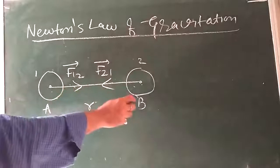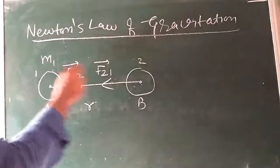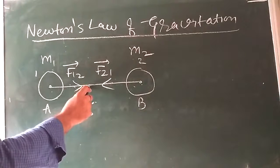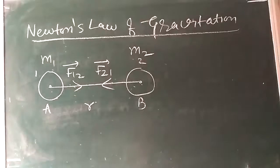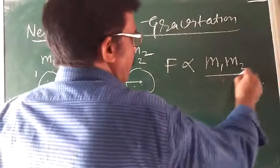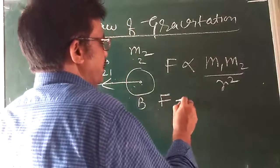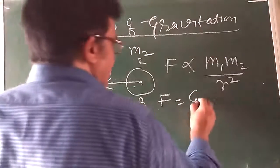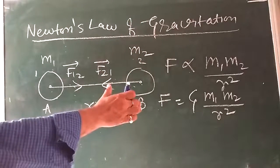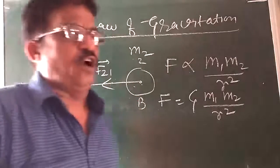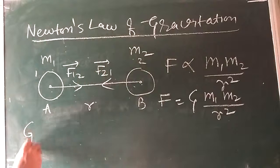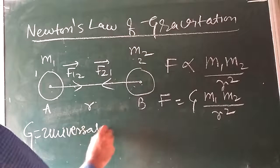We are considering two bodies A and B of mass M₁ and M₂ respectively, with distance R between them. F is the force of attraction. According to Newton's law: F is directly proportional to M₁M₂ and inversely proportional to R². Using constant of proportionality G, F = G·M₁·M₂/R². G is called the universal gravitational constant.